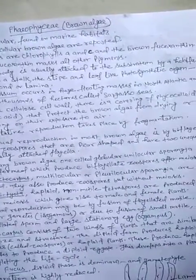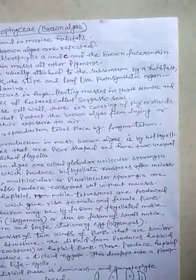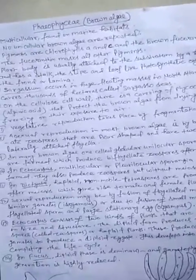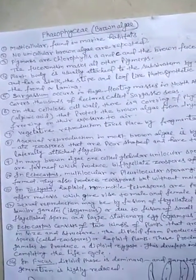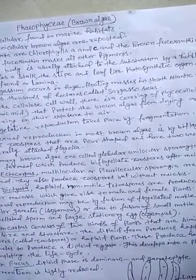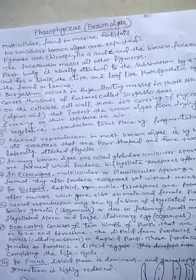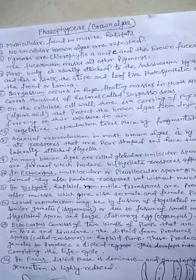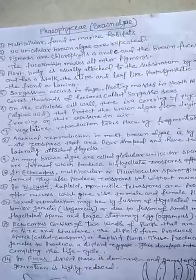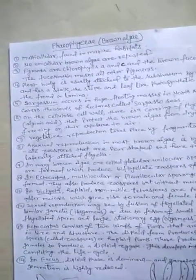In many brown algae, one-celled globular unilocular sporangia develop, which produce biflagellate zoospores after meiosis. In Ectocarpus, there are two types of sporangia: unilocular sporangia that produce zoospores by meiosis, and multilocular sporangia that also produce zoospores but without meiosis.